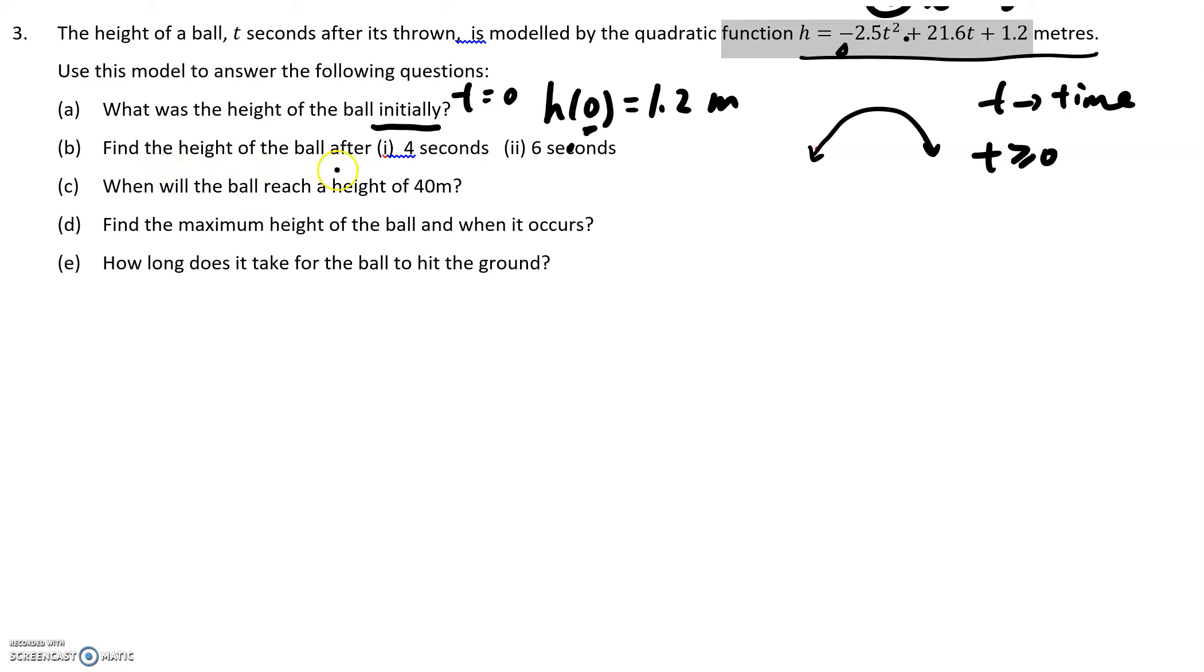And then second, find the height of the ball after 4 seconds and 6 seconds. So basically, what you do is you set in h(4) and h(6). That's what you do. So if you want to set in to h(4), that's gonna be h(4) equals to negative 2.5 times 4 to the power of 2 plus 21.6 times 4 plus 1.2. And then you use your calculator. So you use your graphic calculator to calculate h(4) equals to something.